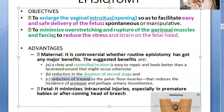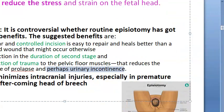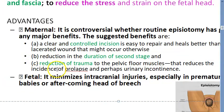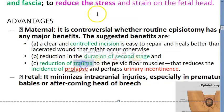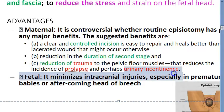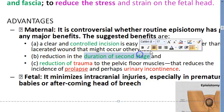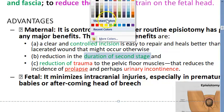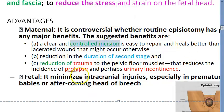There will be a reduction of trauma to the pelvic floor muscles, which will reduce the incidence of prolapse of the uterus and urinary incontinence. So the chances of uterine prolapse and urinary incontinence will be less. The duration of the second stage of labor will also reduce.